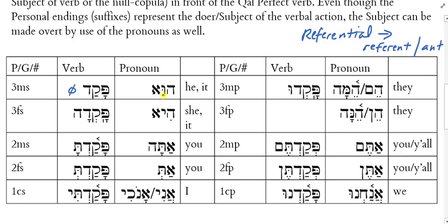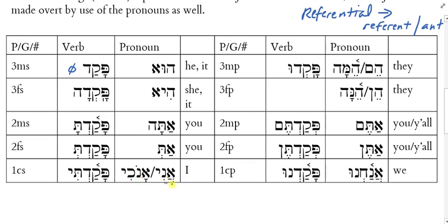Let's walk through these pronouns. Hu — you already know this is 'he,' but notice that I've also told you it can mean 'it,' because it can refer to any masculine singular noun, and some masculine singular nouns are not people but things. So hu can be 'he' or 'it.' Hi can be 'she' or 'it.' Ata is 'you' — masculine singular. At is 'you' — feminine singular. And there are two pronouns for 'I' in Hebrew: ani and anochi.